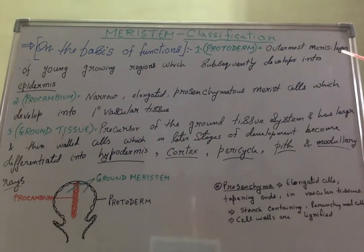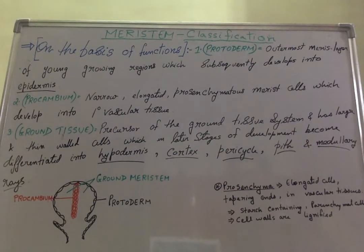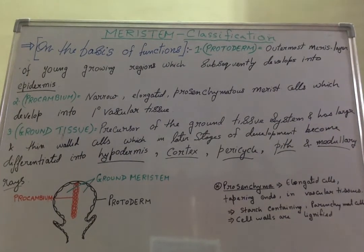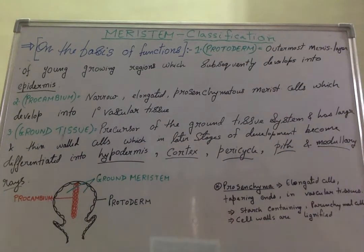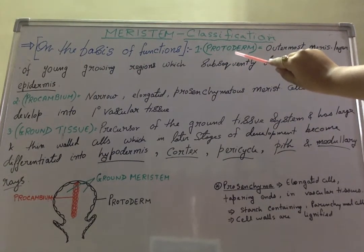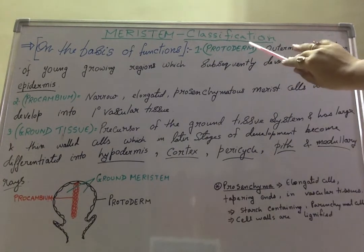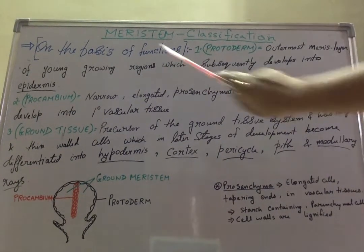Protoderm is the outermost meristematic layer of young growing regions, which subsequently develops into epidermis. Epidermis is the outermost layer found in the plant body and is composed of protoderm, so protoderm is the precursor of epidermis. This layer is not found in old parts of plants but only in young and growing regions.